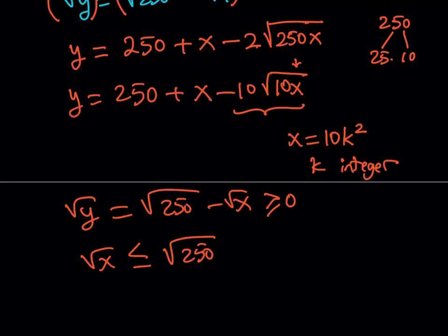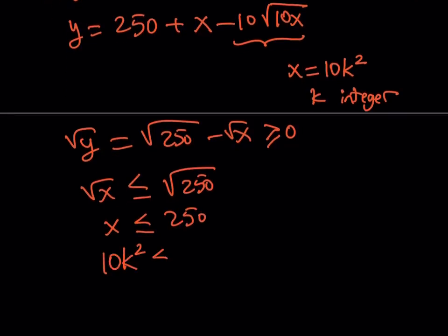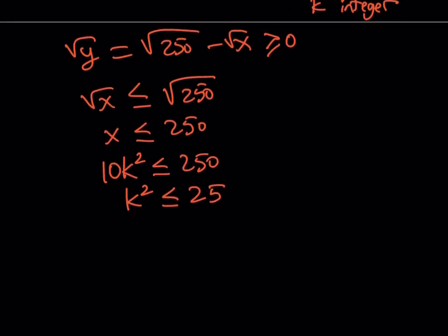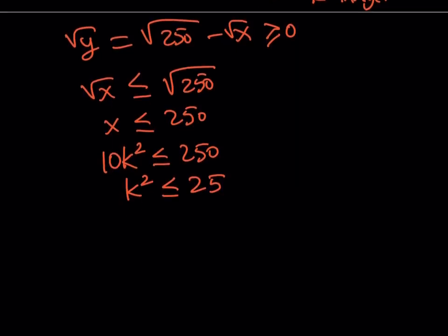And how do we simplify this? Well, I'd like to replace X with 10K squared and square both sides. So we're going to get X is less than or equal to 250. And now I'm going to replace X with 10K squared and divide both sides by 10. And this is going to be the result, right? Okay. K squared needs to be less than or equal to 25. But obviously, if K is positive or negative, it doesn't really matter because notice that X is equal to 10K squared. So even if K is negative, we're going to square it to find X, so it doesn't really matter. Let's just consider the positive values, including 0, of course.